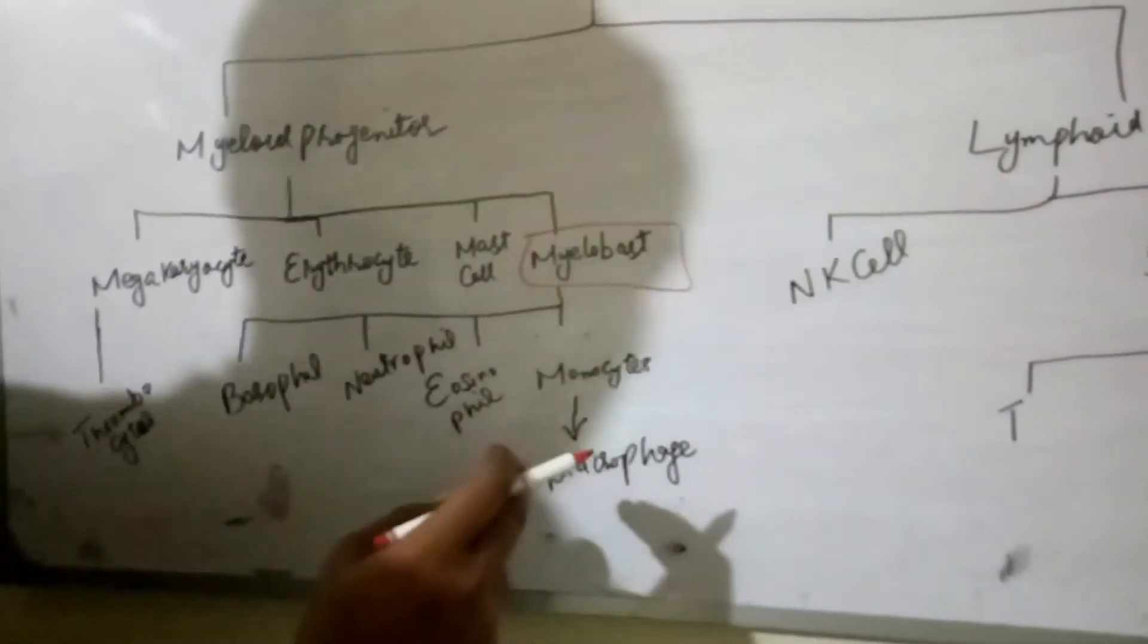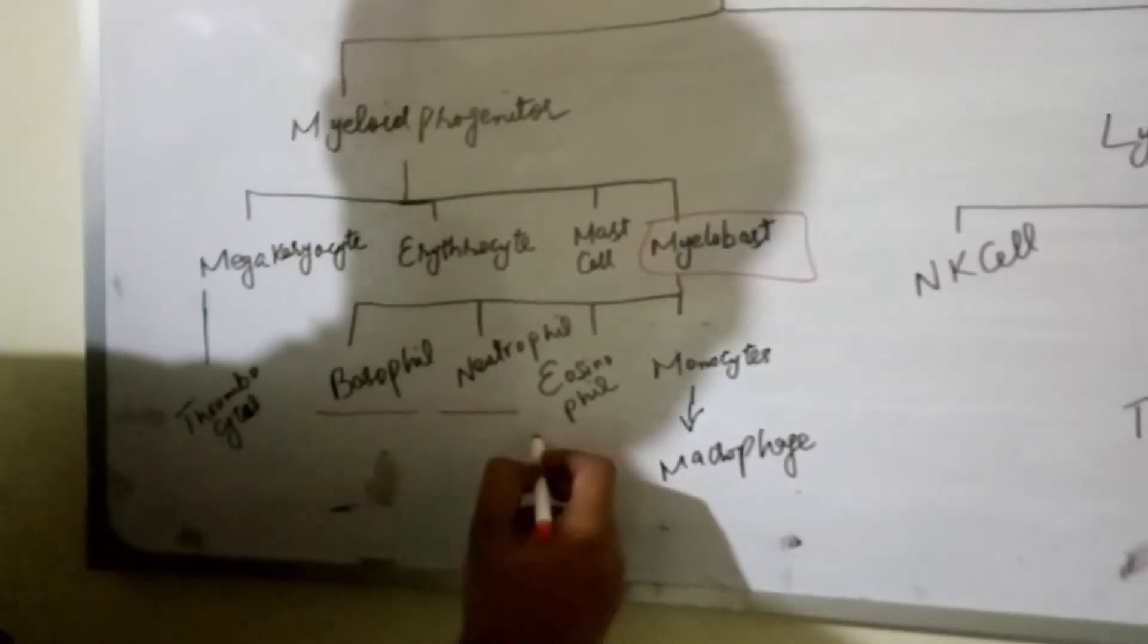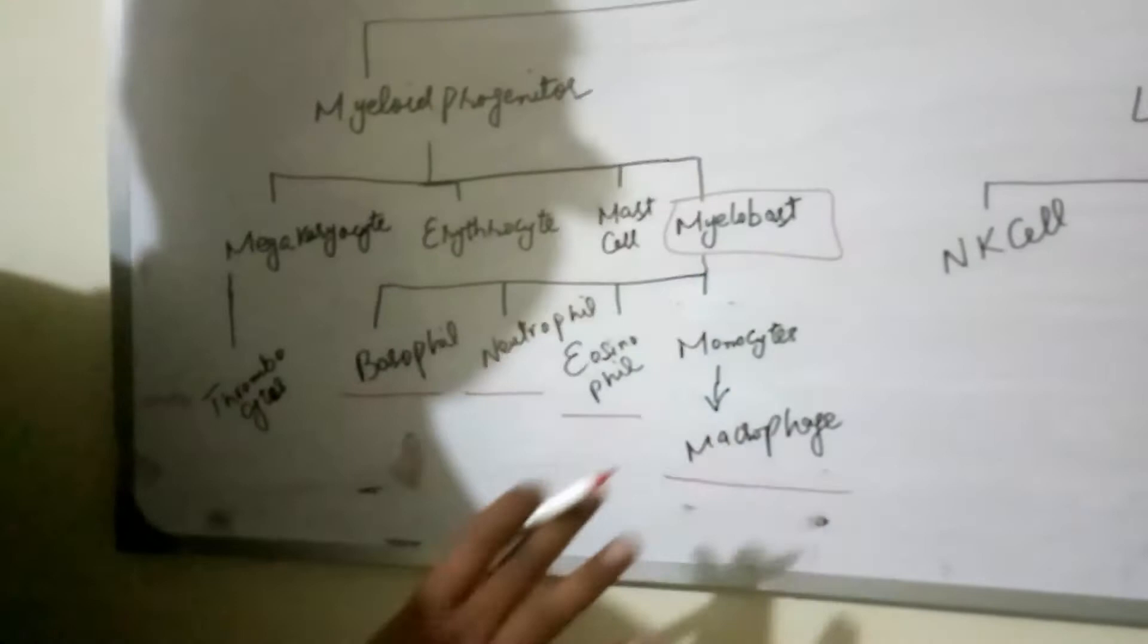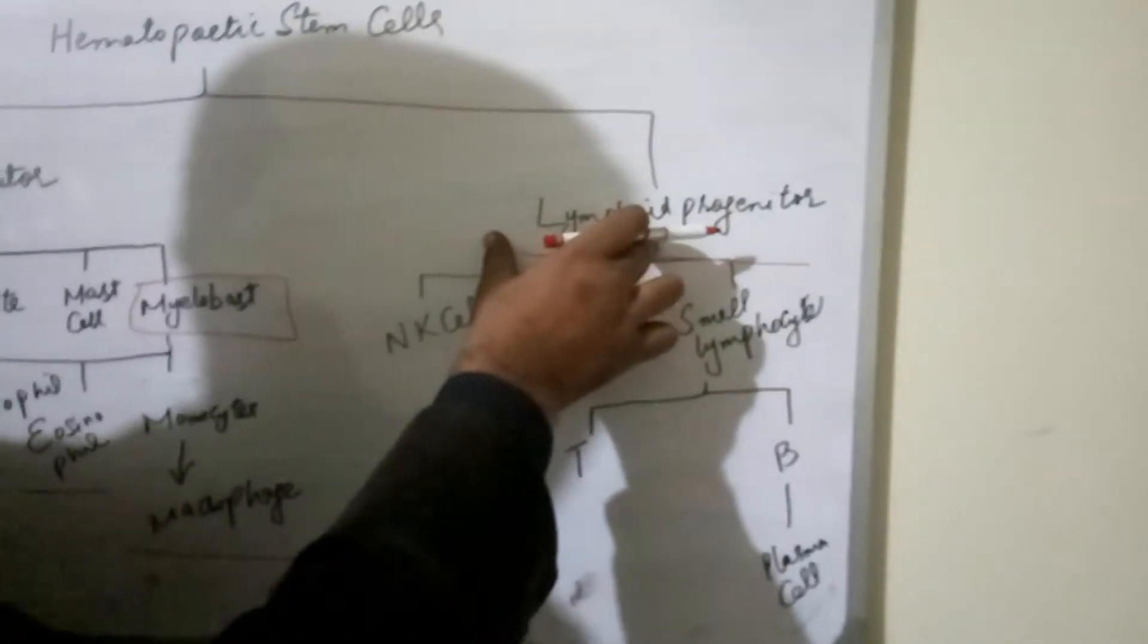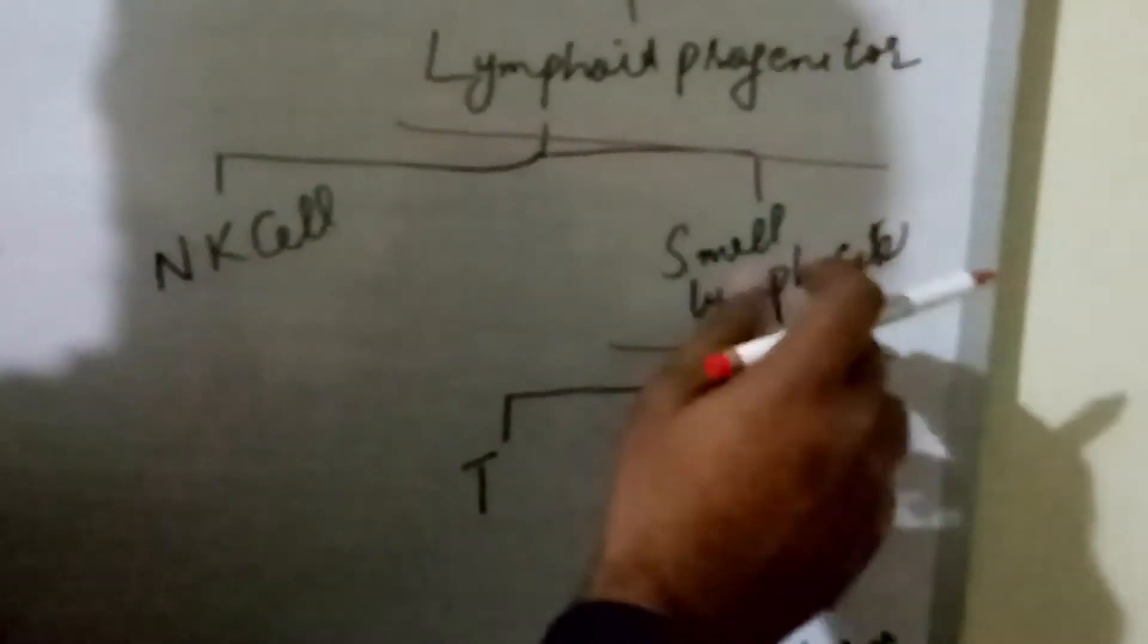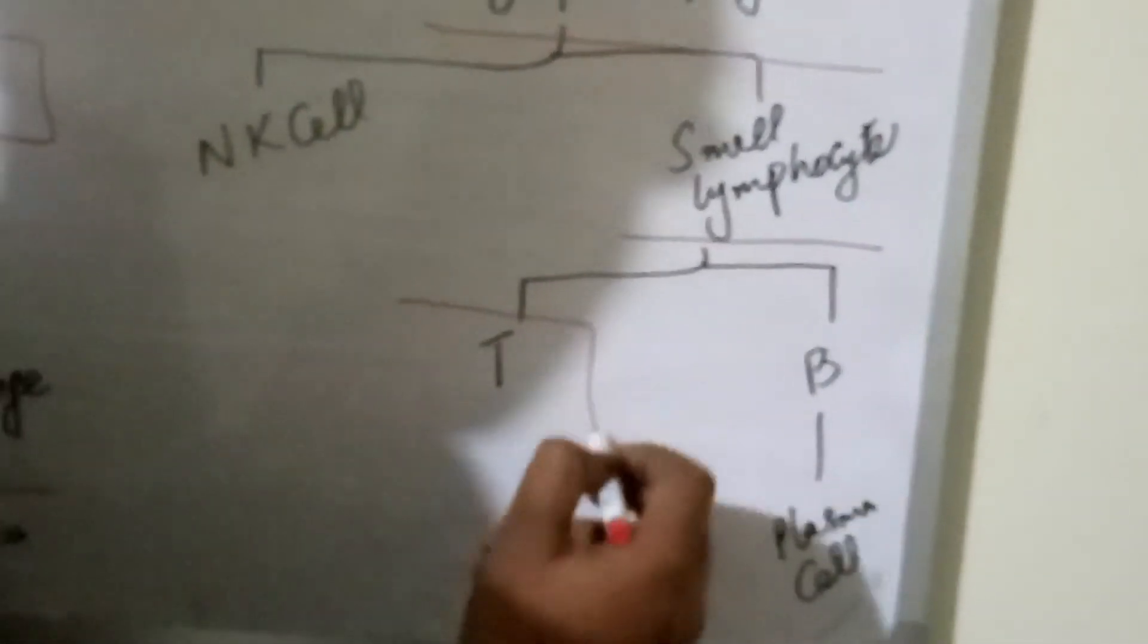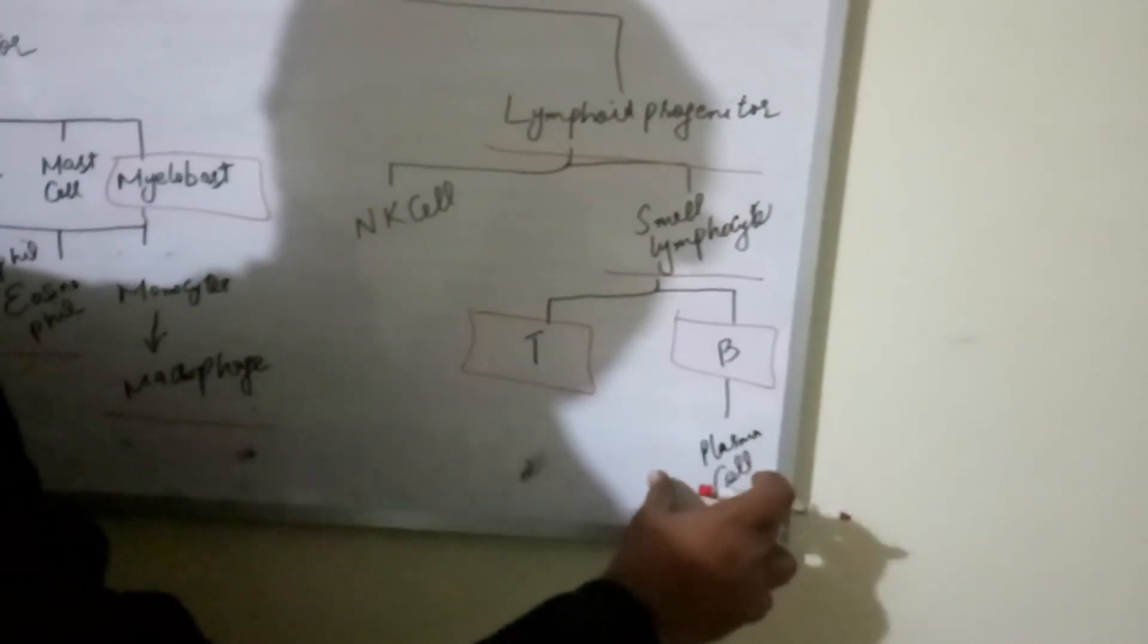Myeloblasts are further subdivided into four types. Basophil, neutrophil, eosinophil, monocyte, monocytes which are further differentiated into macrophages. There is another type of cell which these are lymphoid progenitors. Lymphoid progenitors have two types, natural killer cells and small lymphocytes. Small lymphocytes are further subdivided into two types, T lymphocytes and B lymphocytes. B lymphocytes are converted into plasma cells.